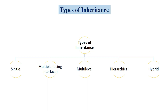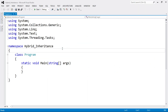Let's see the program of hybrid inheritance, in which I am going to combine two types of inheritance: one is multilevel inheritance and the second one is hierarchical inheritance — or alternatively, single inheritance combined with hierarchical inheritance. I'll open Visual Studio and create a C# .NET application with the program name 'hybrid inheritance'.